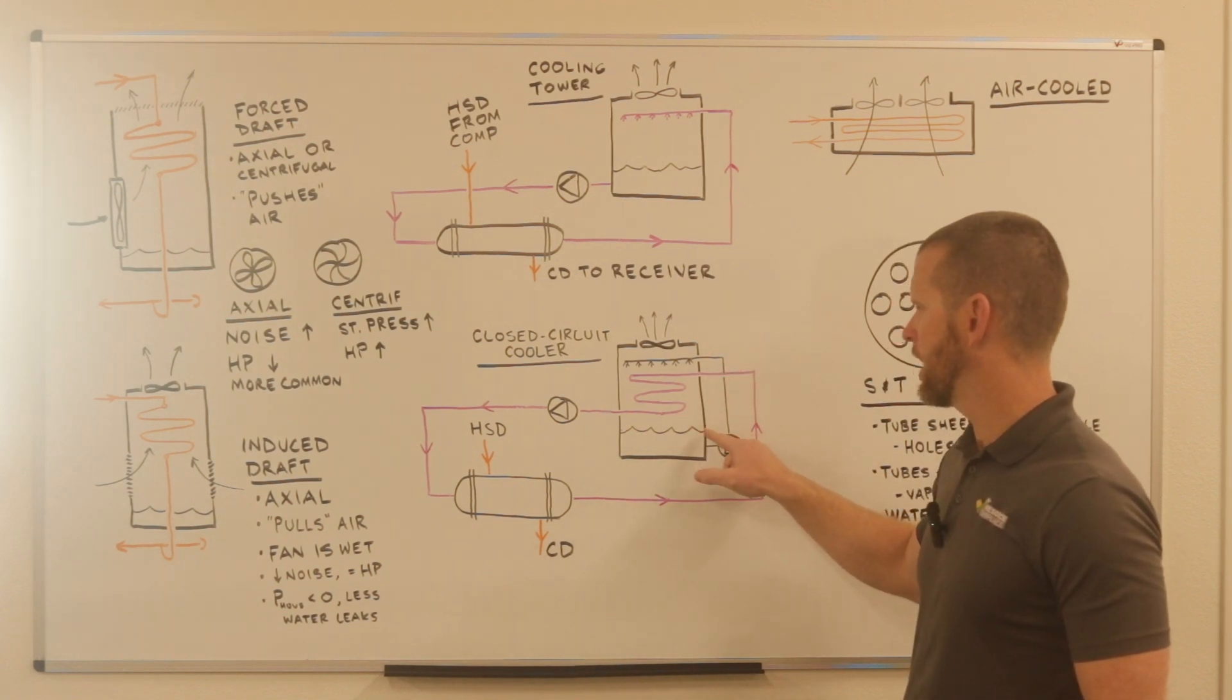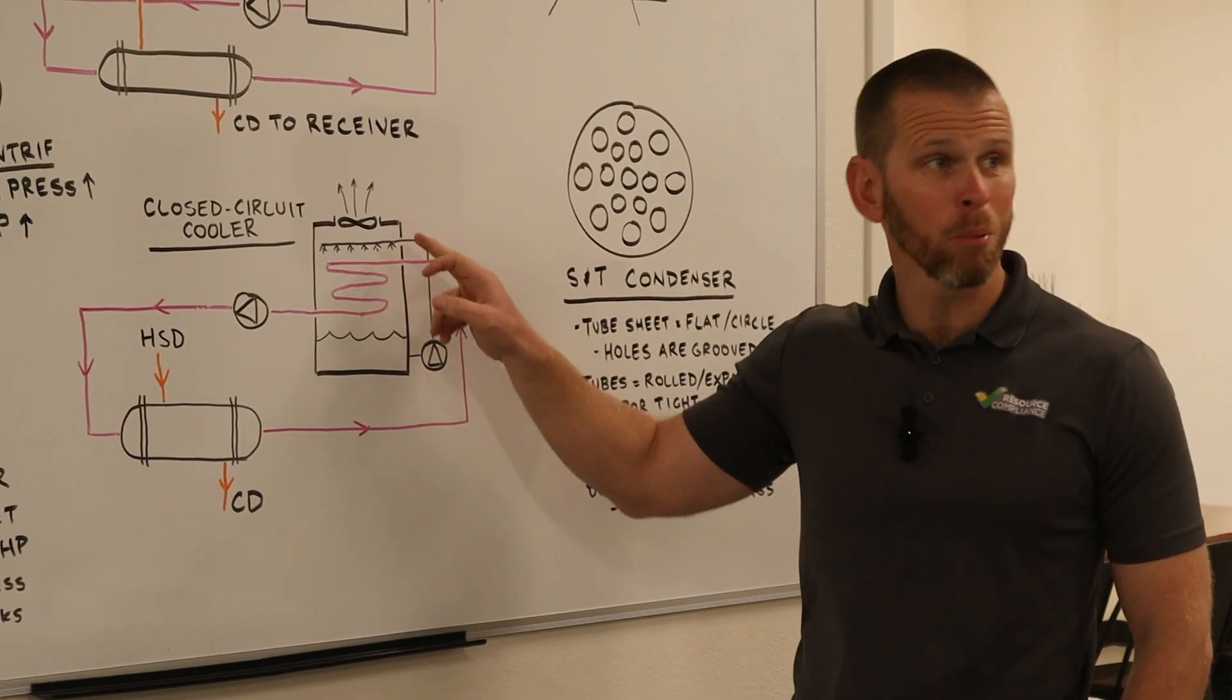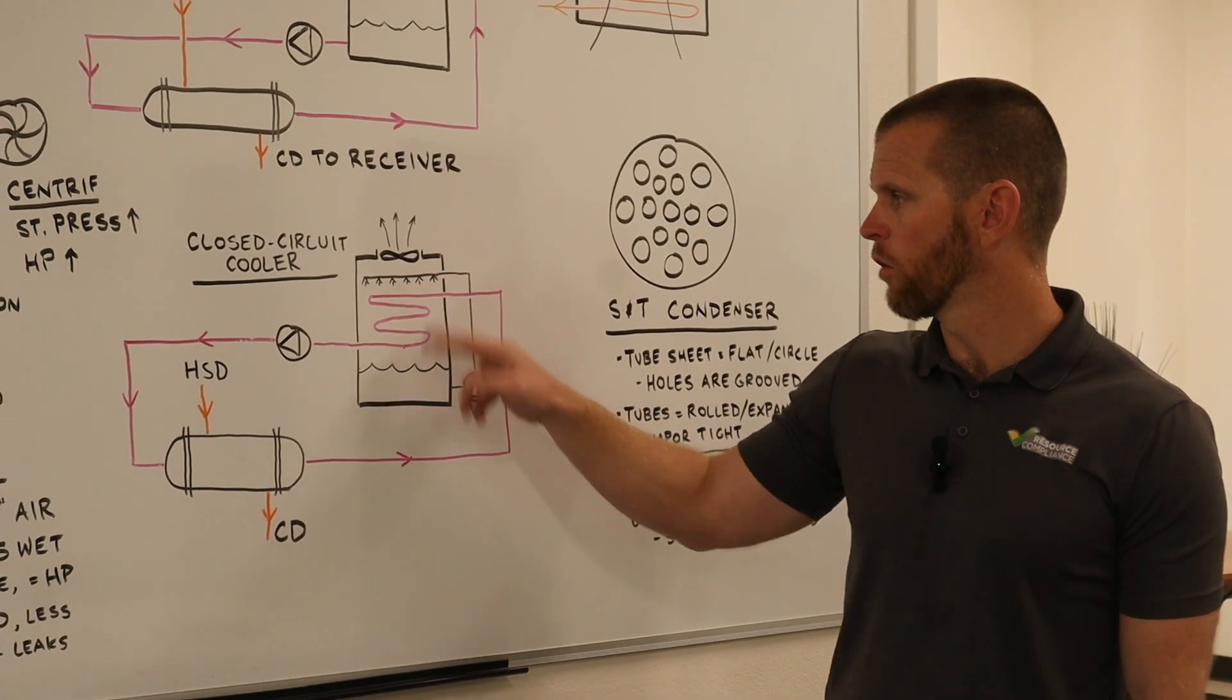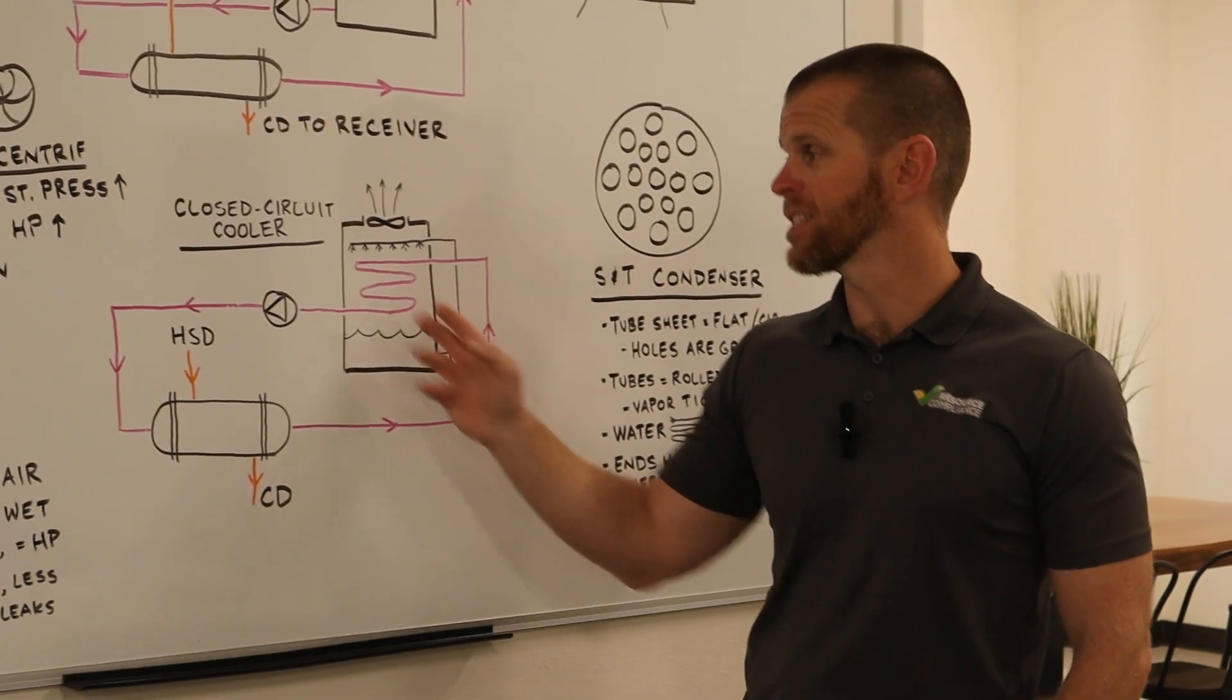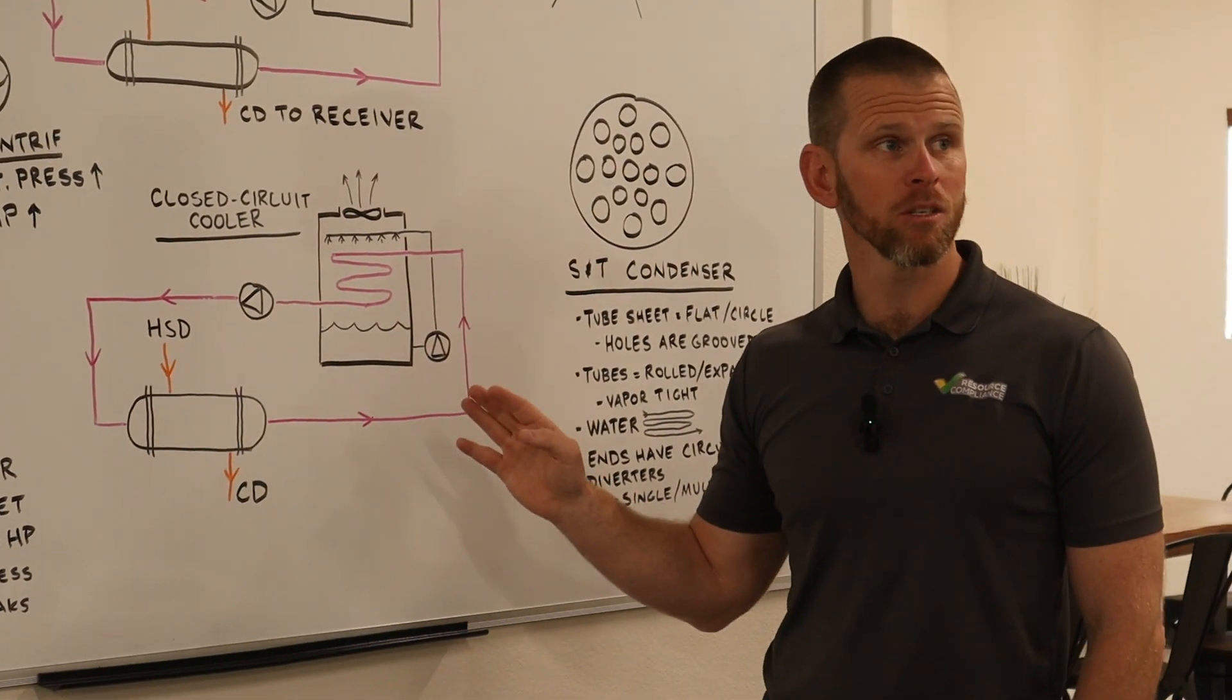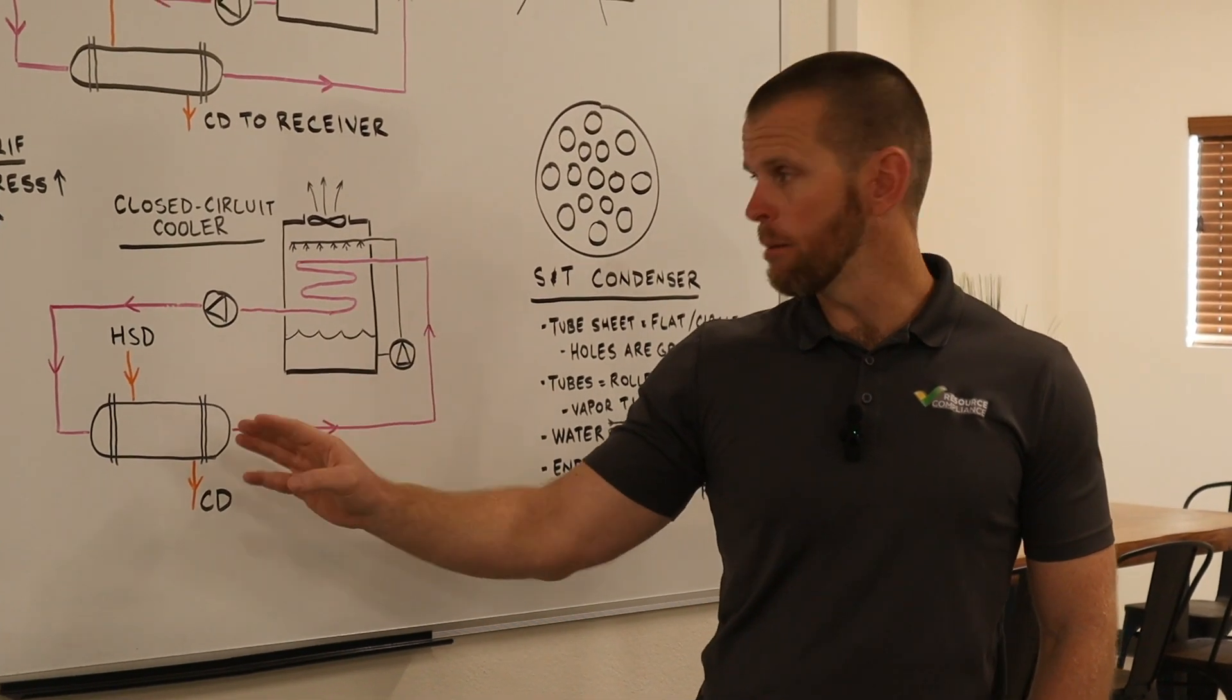We have a float that I didn't draw that would maintain a water level, and then water getting pumped through what I've drawn as a black pipe and sprayed over a tube bundle. Inside the tube bundle is our second circuit of water, which is the circuit that's flowing through our heat exchanger to desuperheat and condense the ammonia.